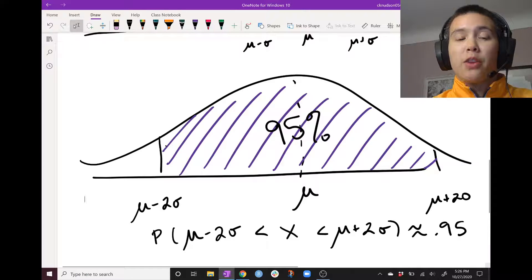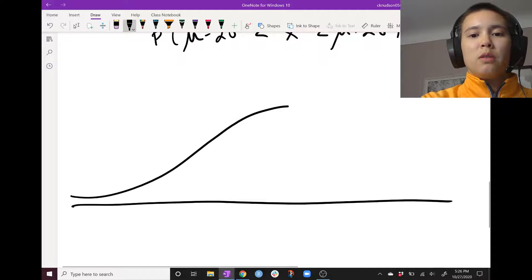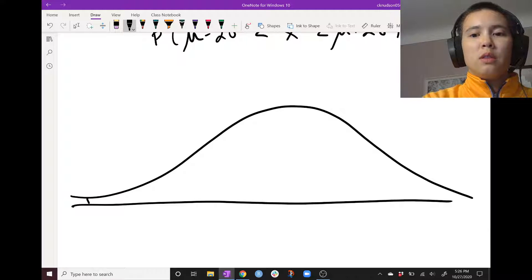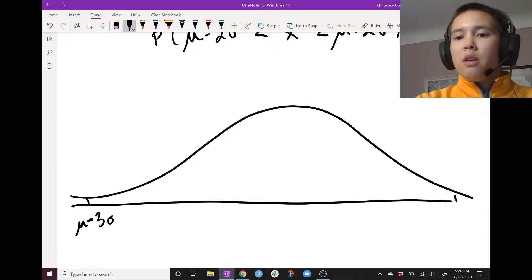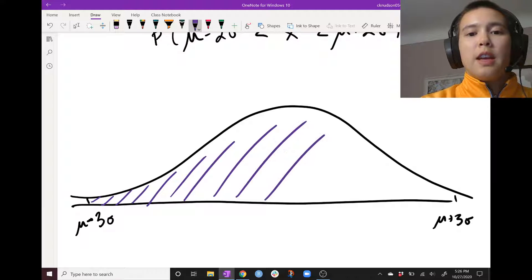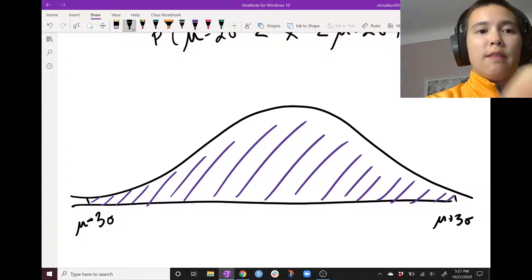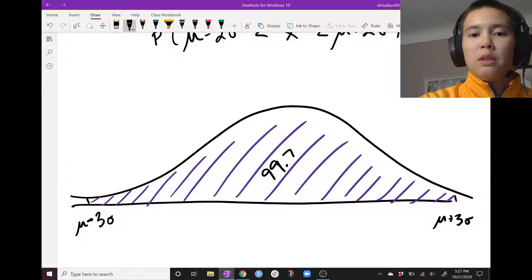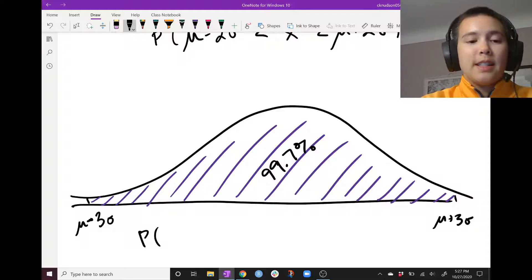And then finally, we can draw the same picture for three standard deviations out. mu minus three sigma, mu plus three sigma, and this purple shaded area hits almost everything. It hits 99.7% of our distribution. So in other words, the probability that x is between mu minus three sigma and mu plus three sigma is about 0.997.